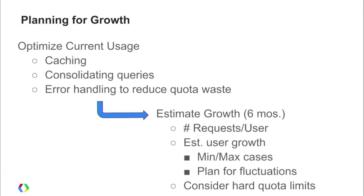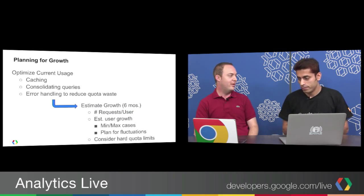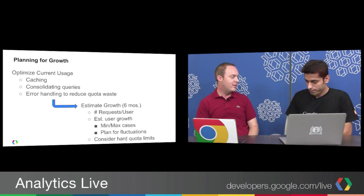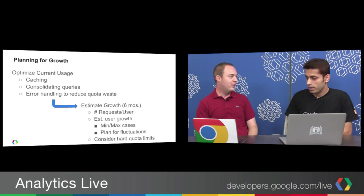One technique to deal with both short-term and long-term quotas is to plan for growth. Keep an eye on the number of users you have and what your growth pattern looks like — look at your 30-day window to see your max daily number of requests. Consider optimizing: are you making too many requests to get the same data? Caching is a huge one that a lot of people don't take advantage of.